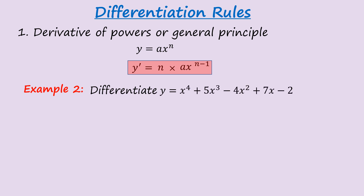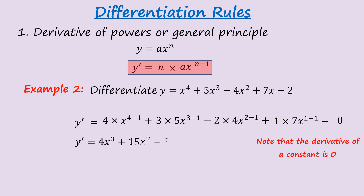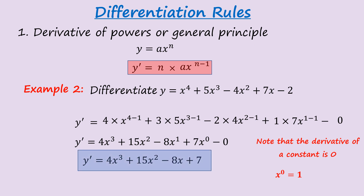Example 2: Differentiate y = x⁴ + 5x³ − 4x² + 7x − 2. Applying the power rule: the 4 comes down from x⁴, giving 4x³; for 5x³, the 3 comes down to give 15x²; for −4x², the 2 comes down to give −8x; for 7x, the power is 1, which comes down to give 7x⁰ = 7; and the constant −2 becomes 0. Therefore, y′ = 4x³ + 15x² − 8x + 7. Note that the derivative of a constant is always 0.